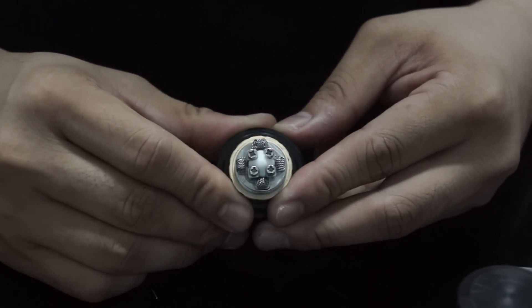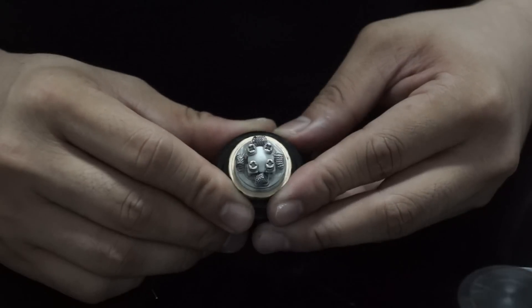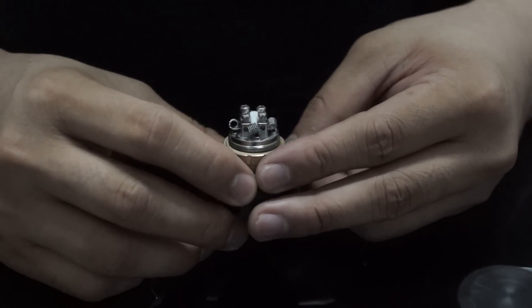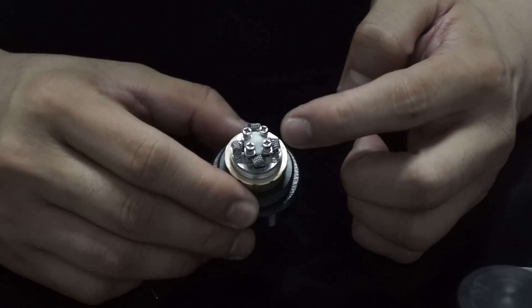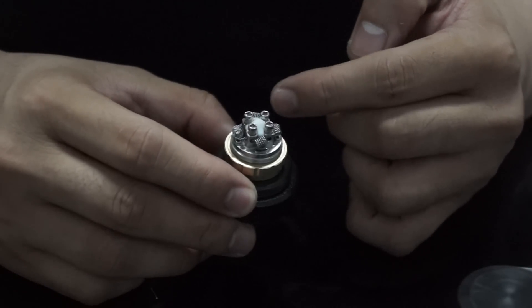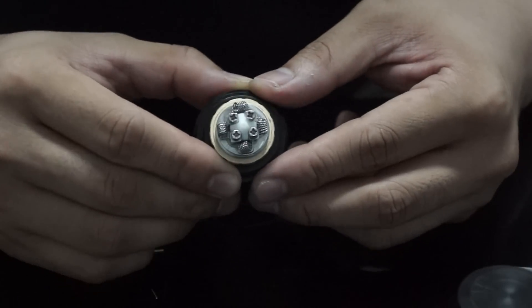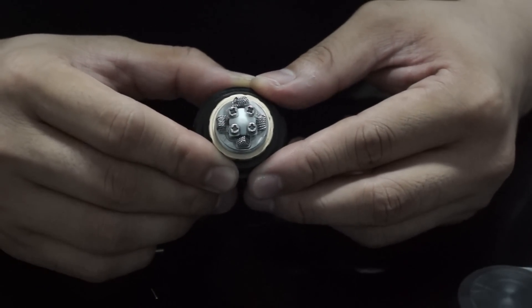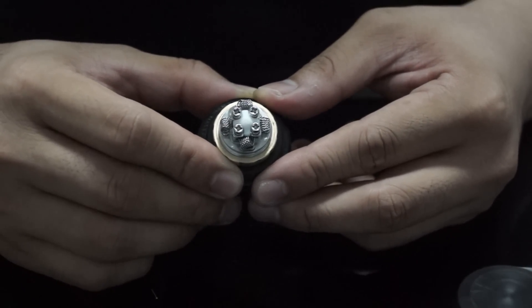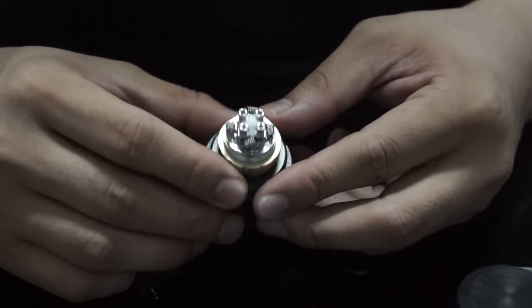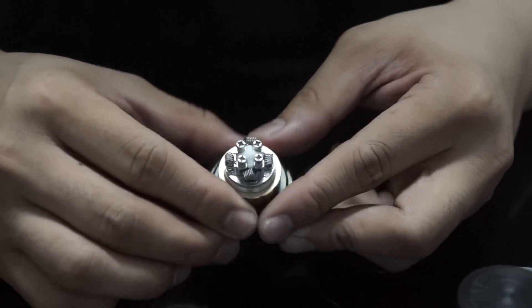So you have your quad coil on your geyser. Again, just make sure that your leads on your coils are not too long that they can get in contact with other coils as well. Alright? So once you're done with that, you can start with wicking it. Alright?